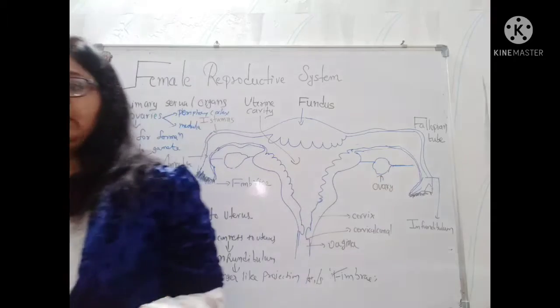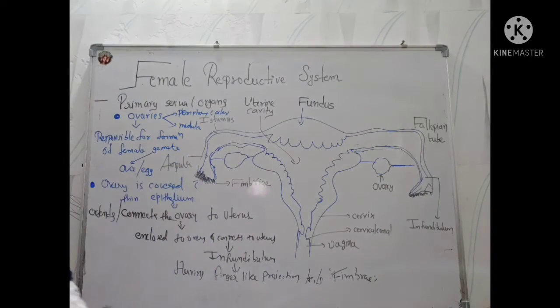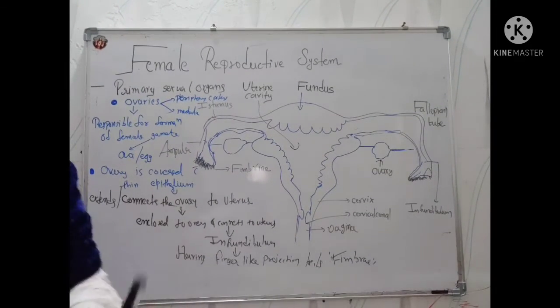The secondary sexual organs will include the uterus, vagina, external genitalia, and mammary glands. Let us see one by one about each and every secondary sexual organ of the female reproductive system.